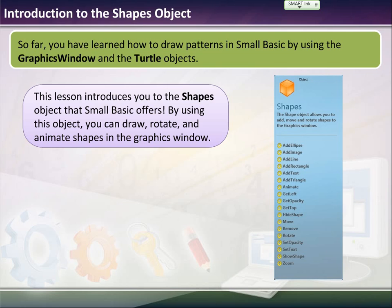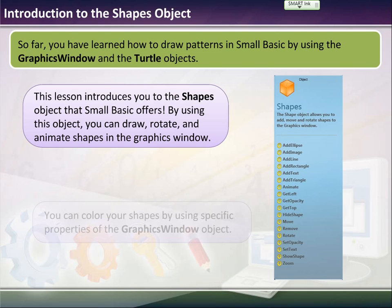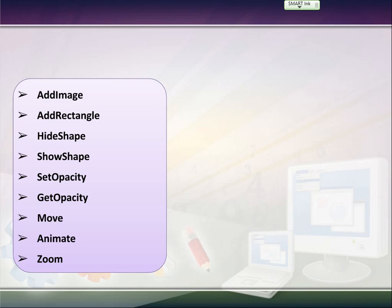Here are the shape objects and all of their operations. You can add an ellipse, add an image, add a line, rectangle, text, triangle. You can animate it, you can get left, you can adjust the opacity, which is like the transparency. You can get top, hide the shape, move the shape, rotate the shape, set the shape, and so on. You can add colors to the shape.